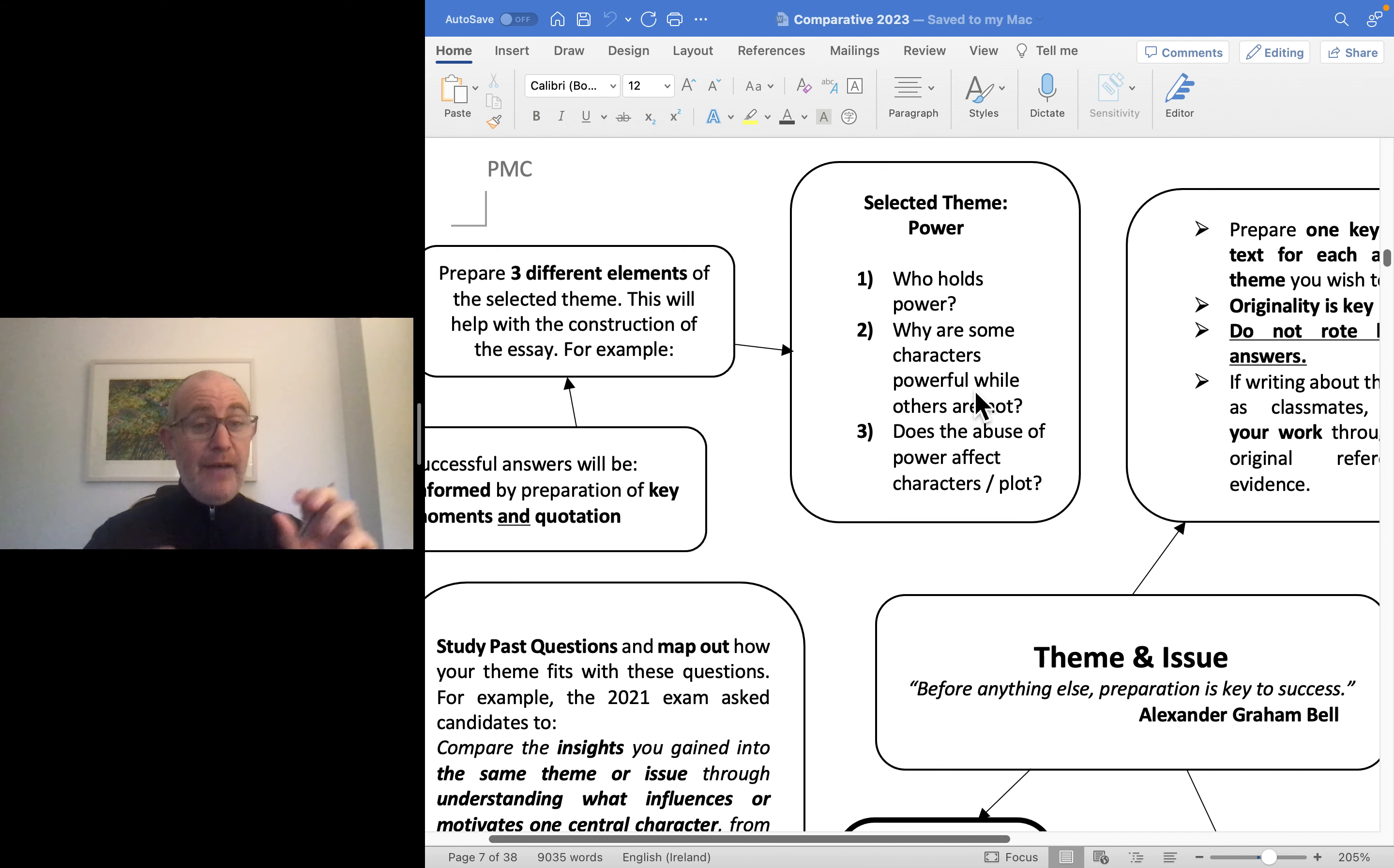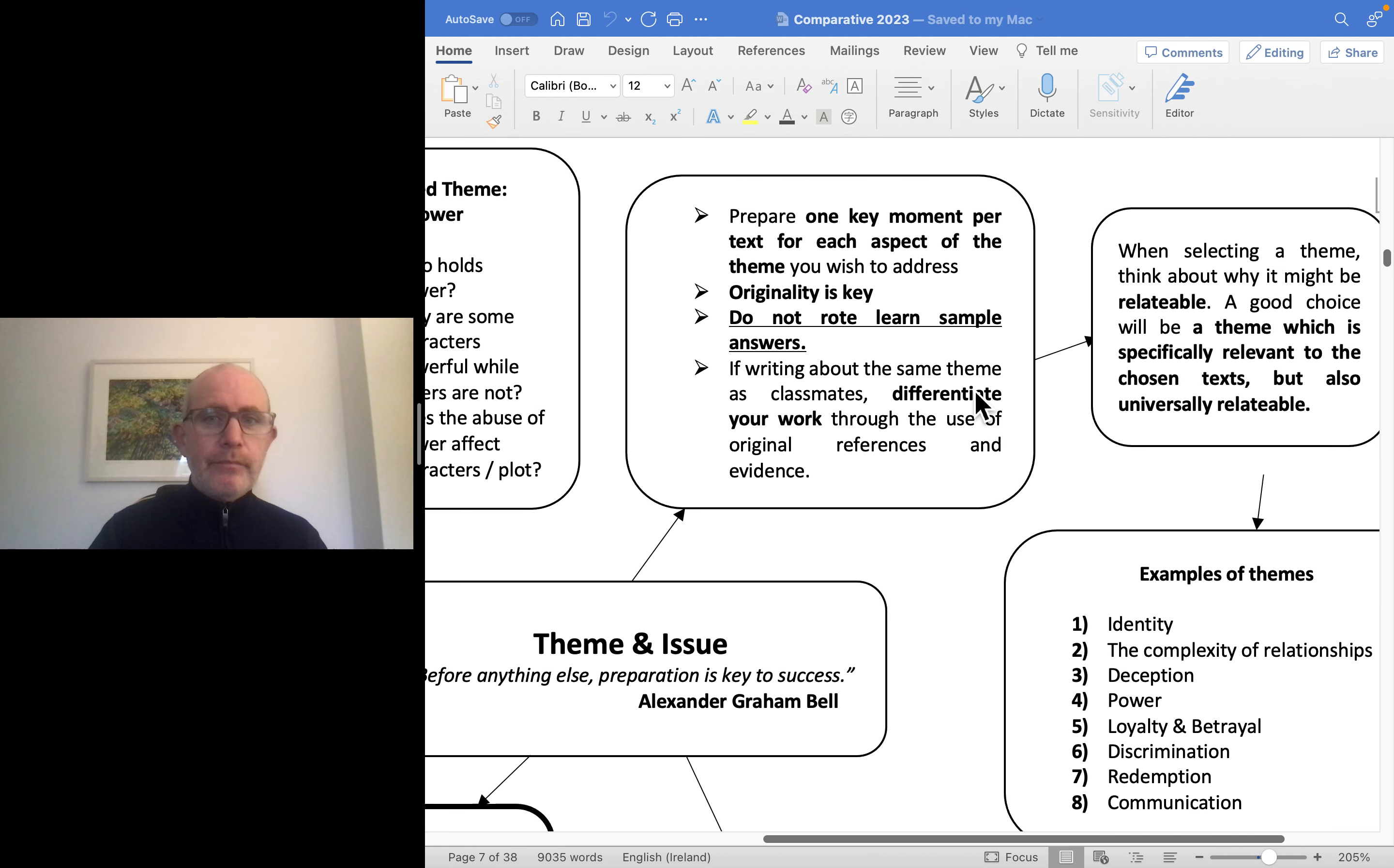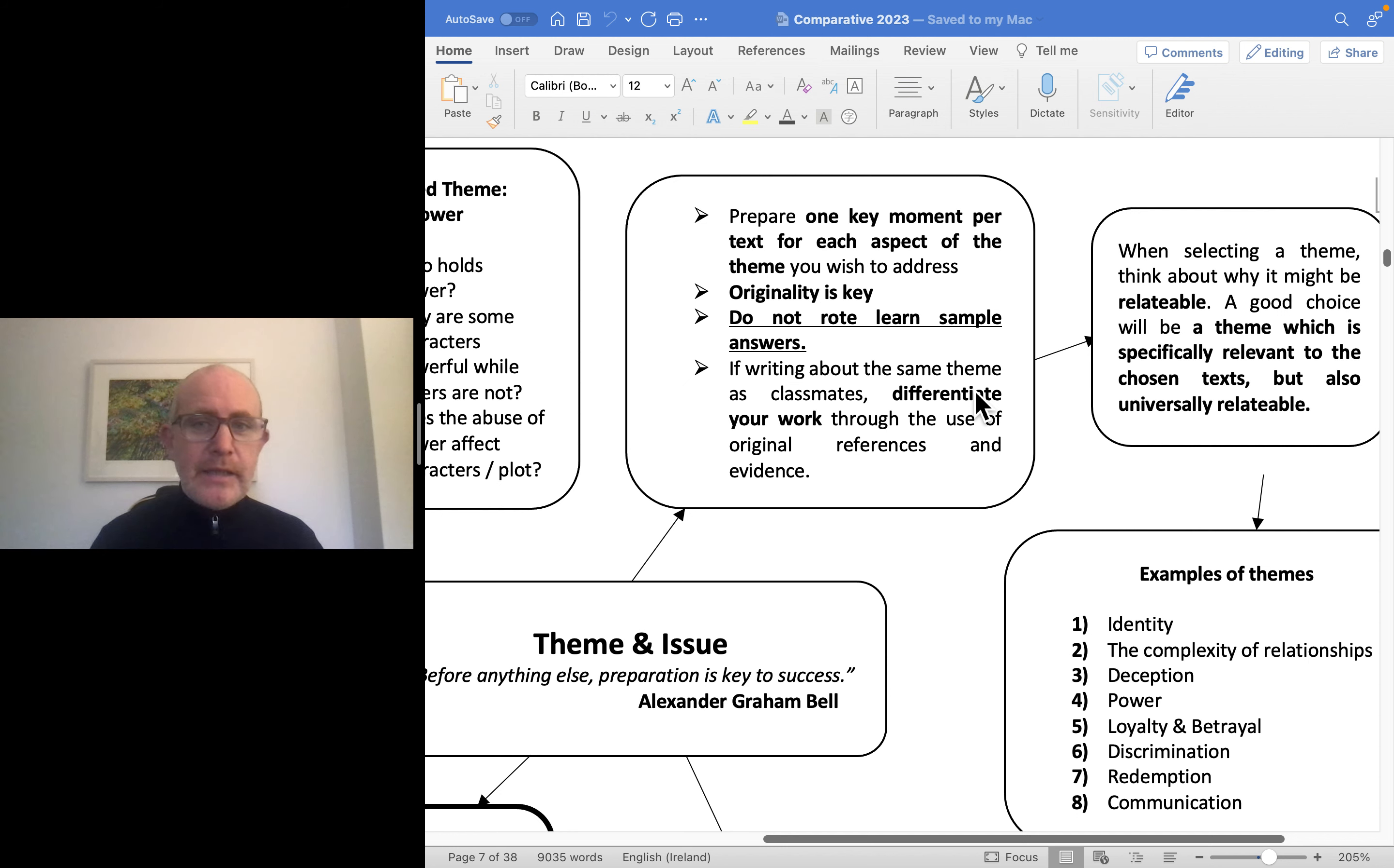Look at different elements of your theme. If you're looking at who has power, have a key moment in each of three texts, or two if you're only doing two texts. Have a key moment which shows them being powerful. Is there anybody who lacks power? Have a key moment showing their lack of power, or does somebody have power and then lose it?